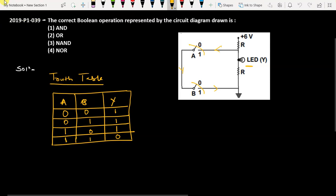We know that this is the combination of AND and NOT gate, so this is the NAND gate. Which option is true? The third option is true. Thank you.